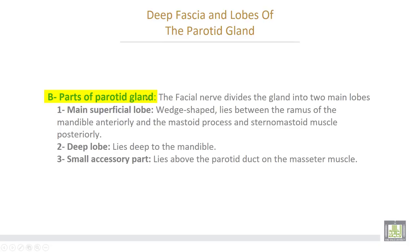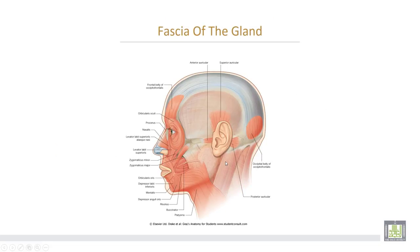Parts of the parotid gland: the facial nerve divides the gland into two main lobes. The main superficial lobe lies between the ramus of the mandible anteriorly and the mastoid process of the skull with the sternomastoid muscle posteriorly. The deep lobe lies deep to the mandible. A small accessory part lies above the parotid duct on the masseter muscle. The deep fascia ascends upwards and splits to enclose the parotid gland, with the superficial layer attached to the zygomatic arch and the deep layer condensing to form the stylomandibular ligament.